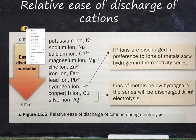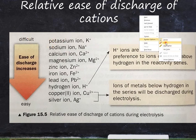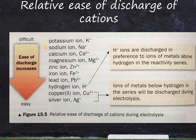There is an important table showing the ease of discharge for cations. Group one elements are not very easy to discharge, followed by group two (calcium, magnesium), then zinc, lead, iron, and then H+. This is similar to the metal reactivity series. Elements above hydrogen in the reactivity series are not easily discharged — instead, hydrogen will come out. Hydrogen ions are easy to discharge compared to metals above hydrogen.